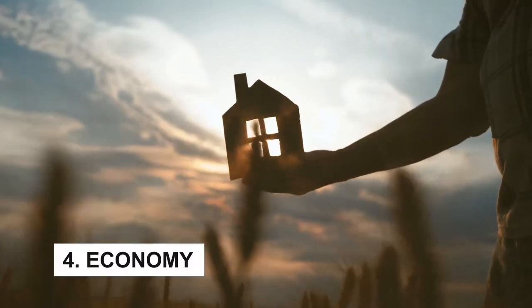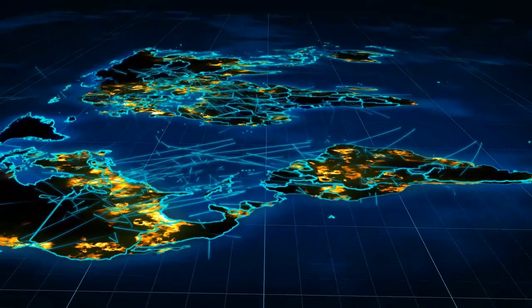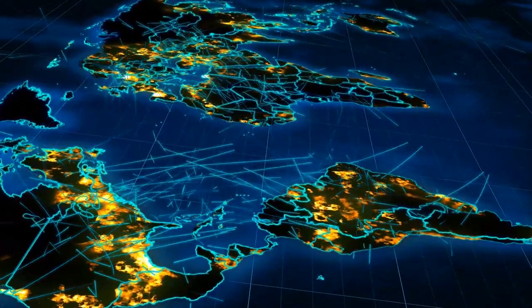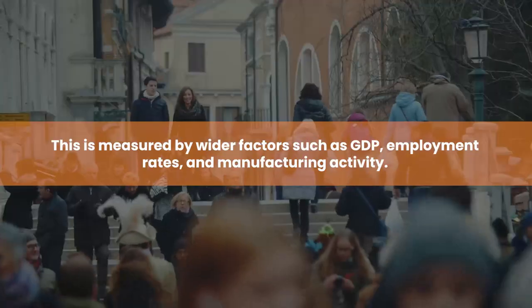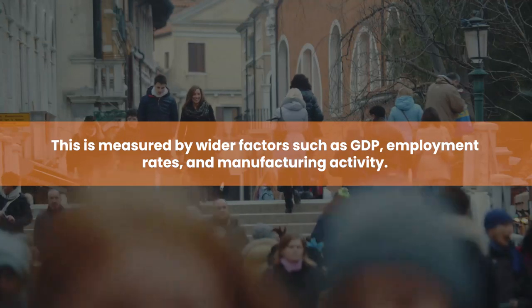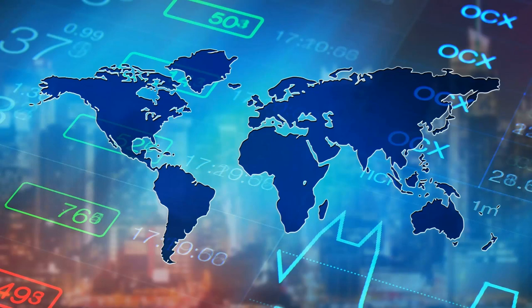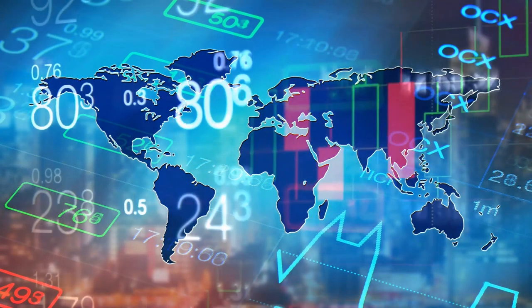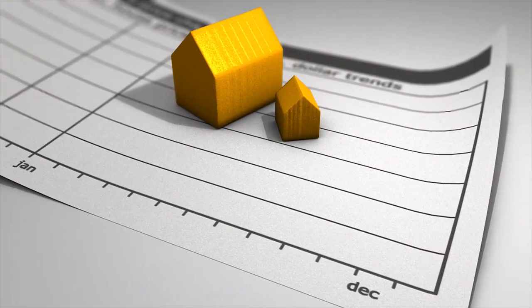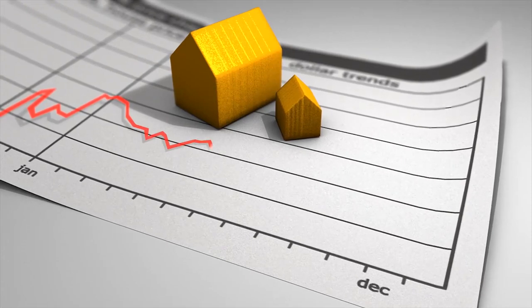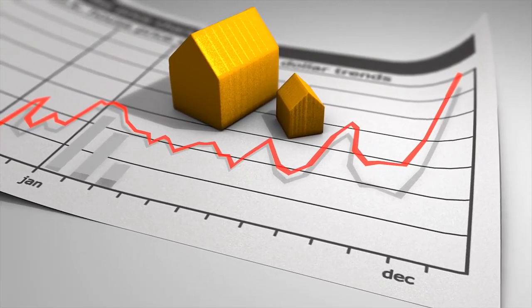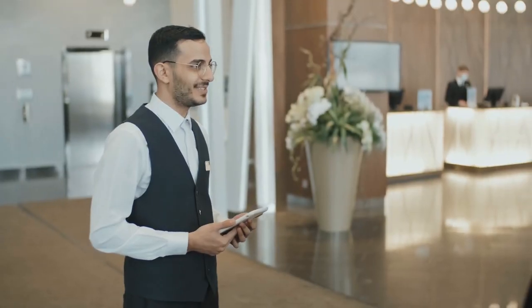Number 4: Economy. Similarly to real estate, the health of the economy is also a factor that correlates with value. This is measured by wider factors such as GDP, employment rates, and manufacturing activity. When the economy slows down, so does the value of property. Real estate investment cycles can vary, but the speed of economic downturns on specific real estate investments might not be as straightforward — for example, REITs with a high concentration in hotels versus those with a high percentage of office investments.